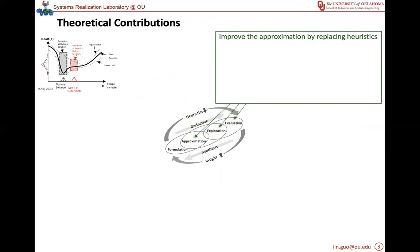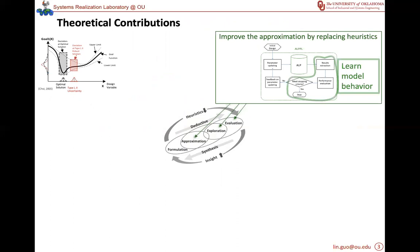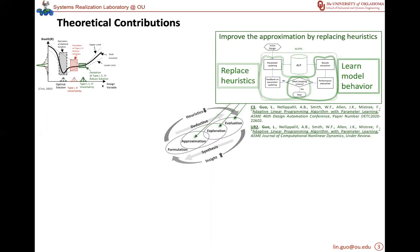Next, given that heuristics used in approximation can be wrong, I propose to use machine learning to learn the model behavior and improve the approximation by replacing the heuristics with mathematics. This is to connect the approximation, exploration, and evaluation. Therefore, we make the solutions robust to type one to three uncertainty. The type three uncertainty is the uncertainty in model structure and approximation. I used a problem in manufacturing, the hot rod rolling design.